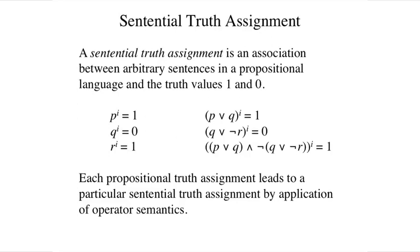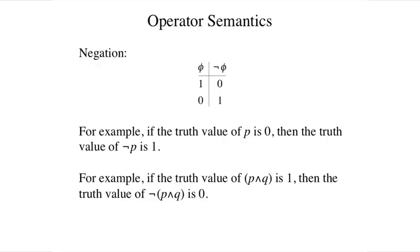Viewed another way, we can extend any propositional truth assignment to a sentential truth assignment. Start with negation. If the truth value of a sentence is true in a truth assignment, then the truth value of its negation must be false. If the truth value of a sentence is false, then the truth value of its negation must be true.